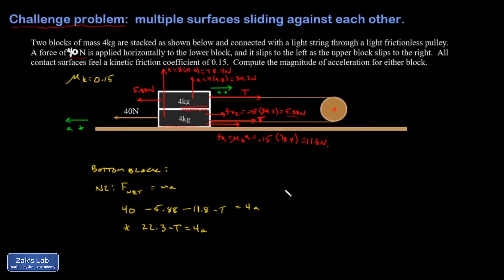That equation has two unknowns in it. I need a second equation. So I'm going to look at the top block. The N2 analysis for the top block, F net equals MA. The positive direction for this one is to the right in order to make A positive. So I have T minus 5.88 equals 4A. And that's my second equation that has two unknowns in it.